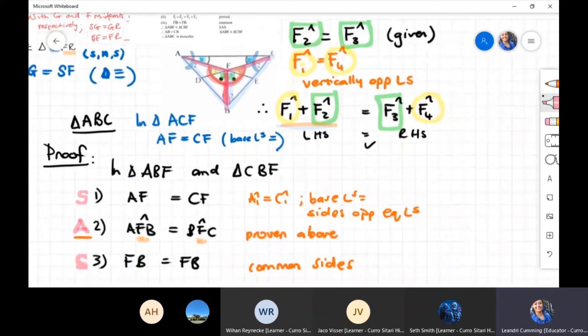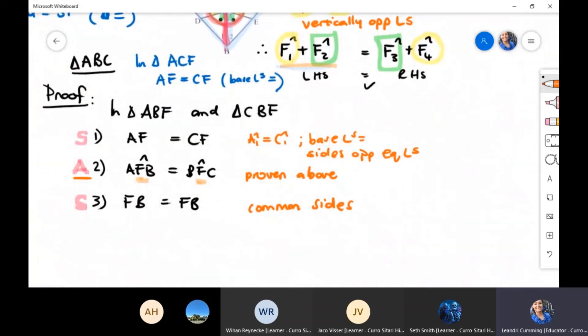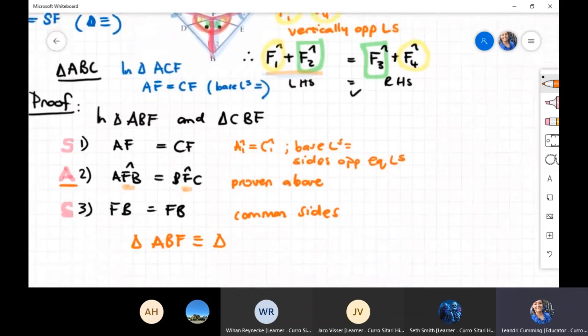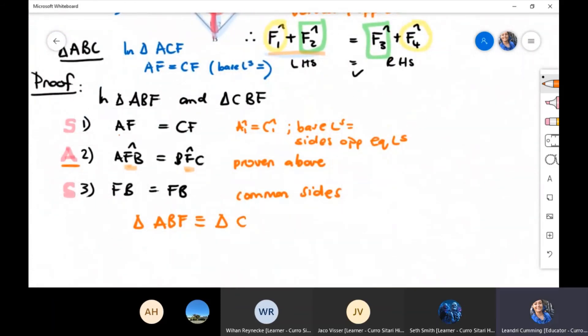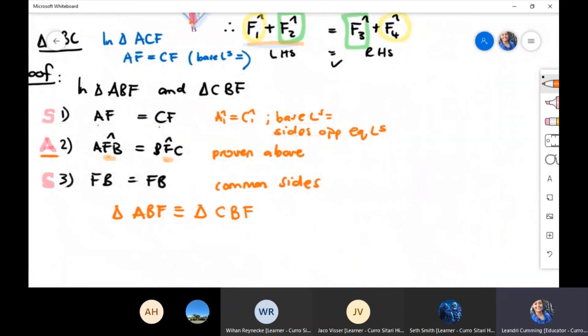So now let's just see. We have to write the order correctly. Triangle ABF is therefore congruent to triangle CBF because A is equal to C, angle B, and then angle F. So ABF and CBF because of angle F there in the middle. Side, angle, side.